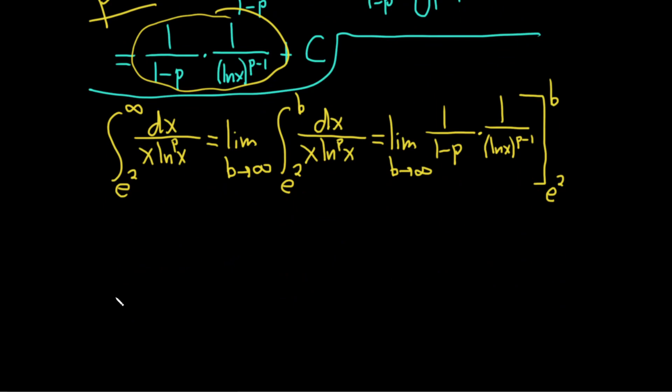So now we have to be a little bit careful. So this is equal to the limit as b approaches infinity. And we first plug in the b. As far as this 1 over 1 minus p, I'm just going to leave it like this. It's independent of the limit. You could pull it out. I'm going to put a bracket here to indicate that. We're just going to leave it out of this computation. But plugging in the b, we get 1 over the natural log of b to the p minus 1. And then we subtract. And then you plug in the e squared. So this is the natural log of e squared to the p minus 1. Just like that. Okay.